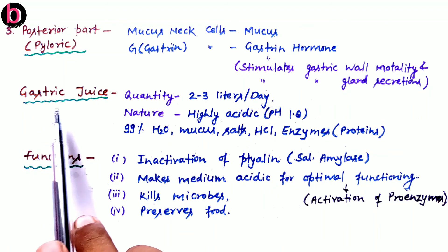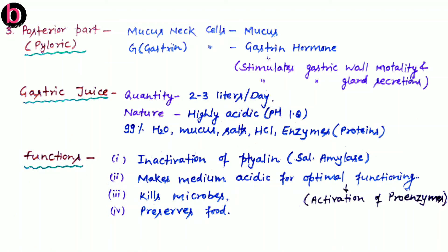Gastric juice is the sum of all secretions except hormones. It includes mucus, bicarbonate ions, propepsin, prorenin, HCl, and Castle's intrinsic factor. All these together are known as gastric juice.